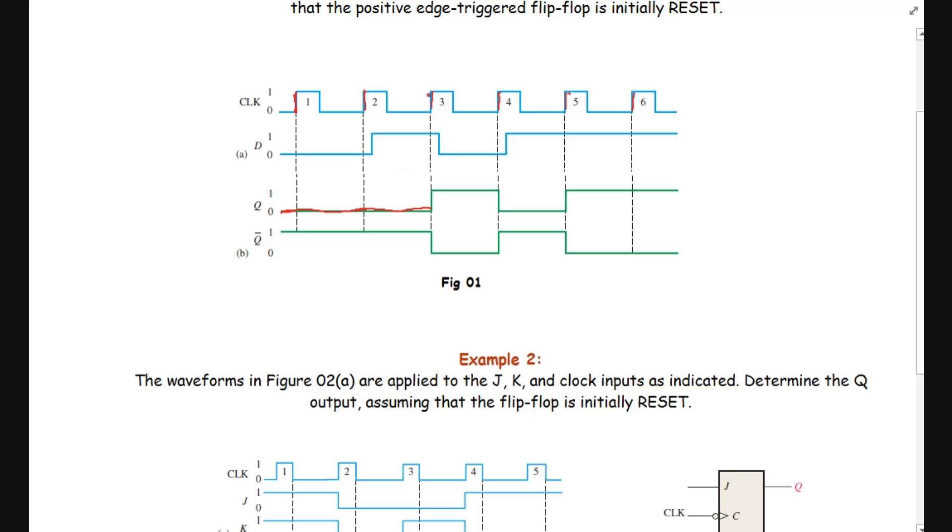At the third pulse, we have this positive edge. The data is high, so the output Q will be high. It will remain high unless the next triggering occurs. Then we have the next triggering, the positive pulse. This time the data is 0, so the output Q will be 0. It will remain 0. Then we have the next pulse where the data is high, so it will remain high.